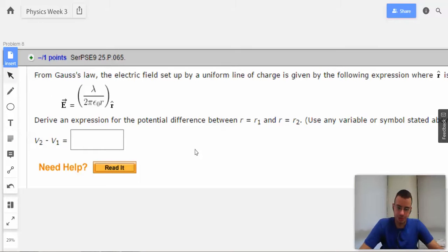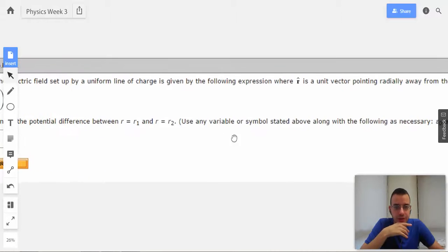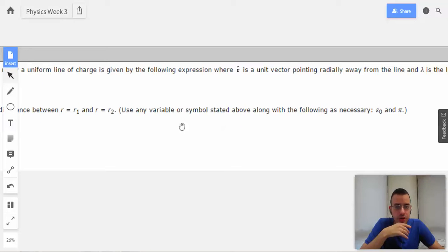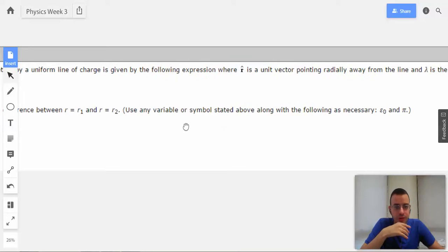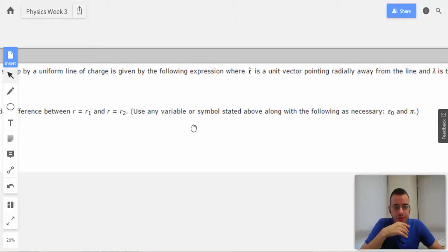Derive an expression for the potential difference between R1 and R2. Use any variable or symbols stated above with the following as necessary. They want us to use epsilon dot and pi.